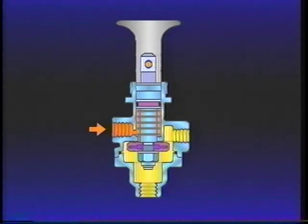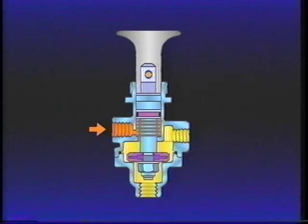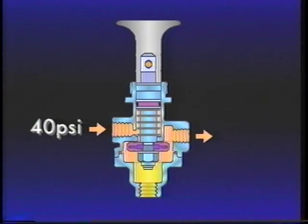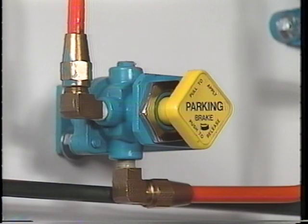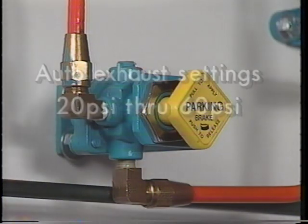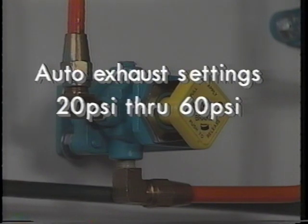Of course, pushing the plunger back in to the applied position reactivates the control. But supply air pressure must be above 40 PSI for it to stay in. The PP1 is available in a range of auto exhaust settings from 20 PSI through 60 PSI.